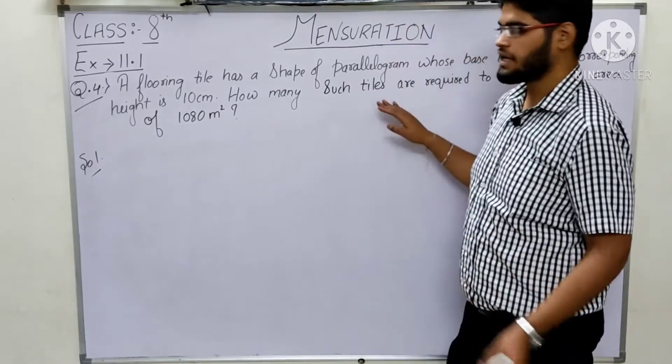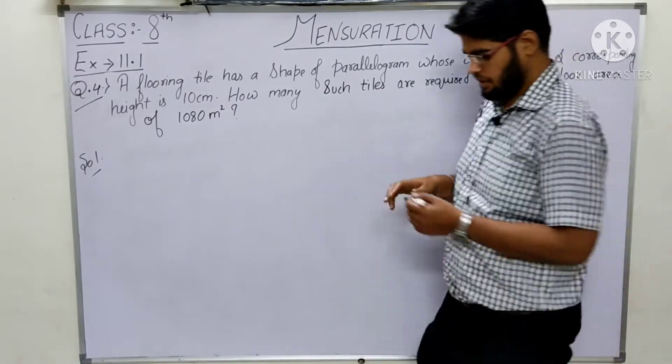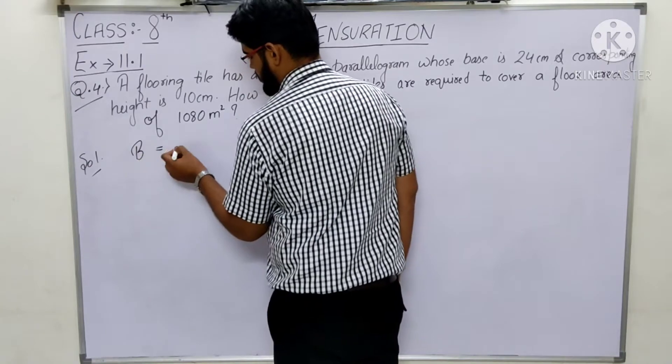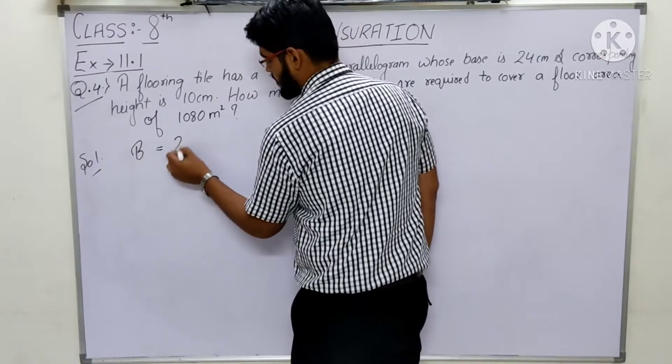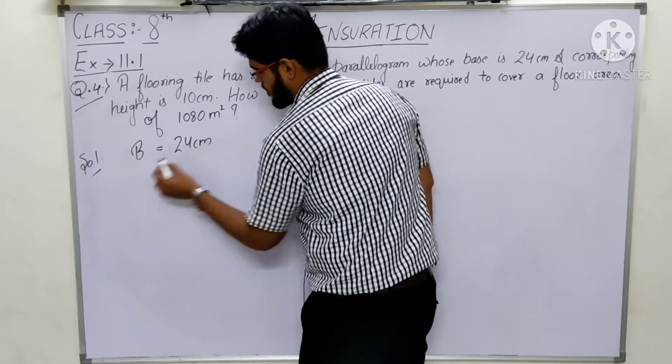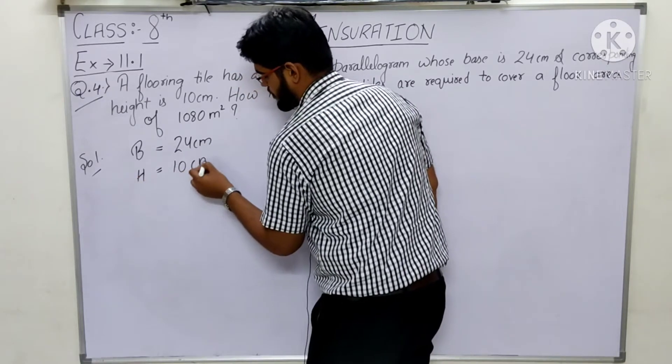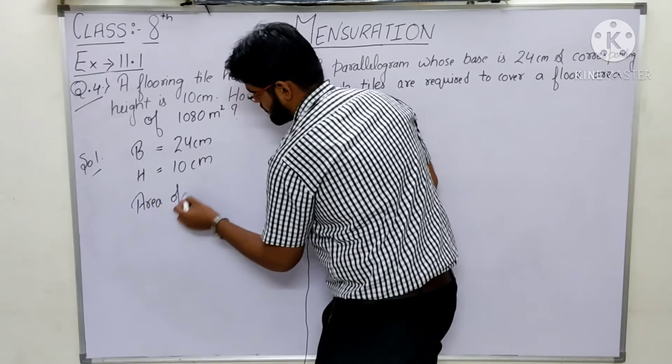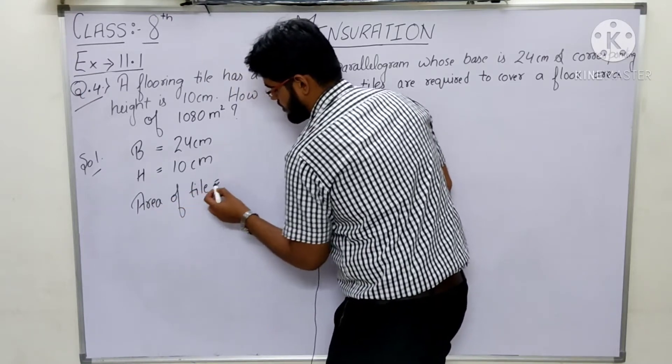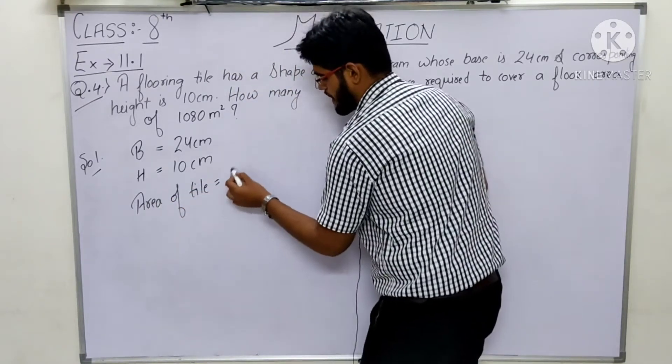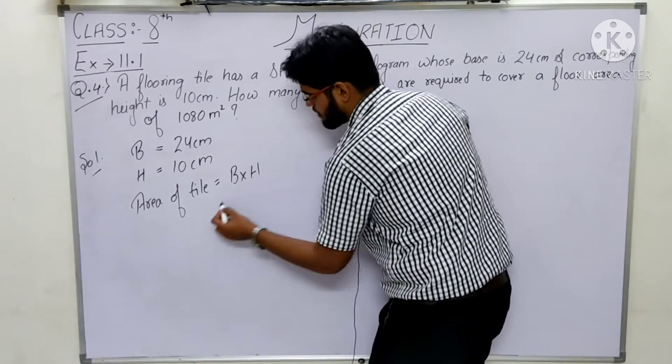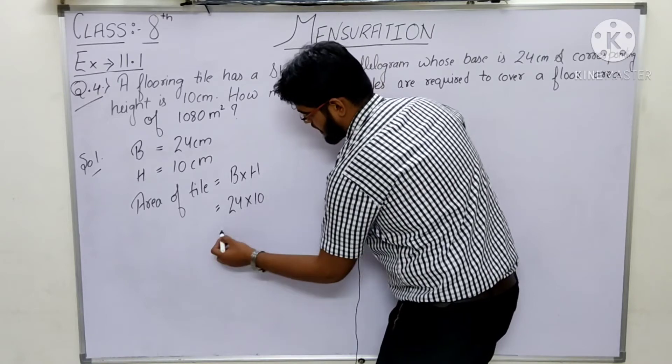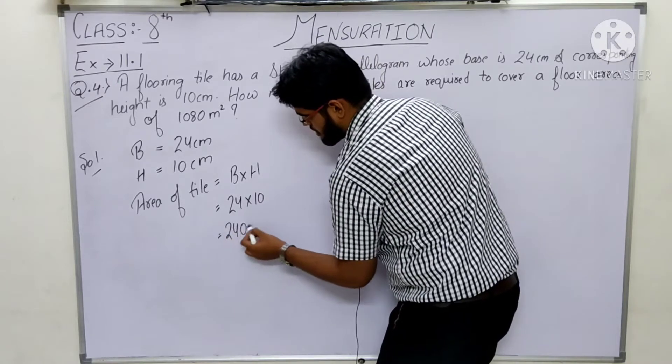So first of all, the area of the parallelogram tile. The base is equal to 24 cm and height is 10 cm. So area of tile, that is B into H, base into height, that is 24 into 10, that is 240 cm².